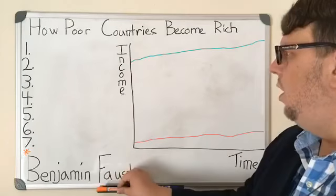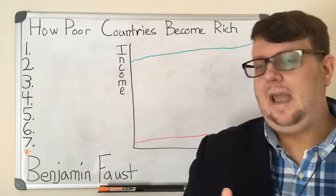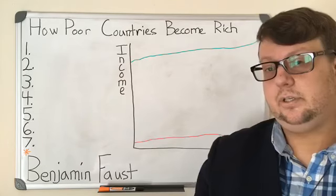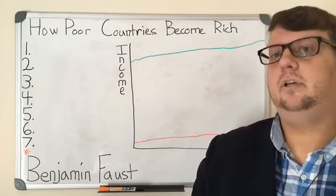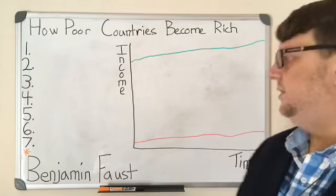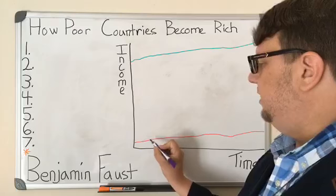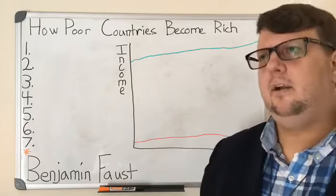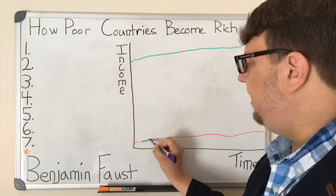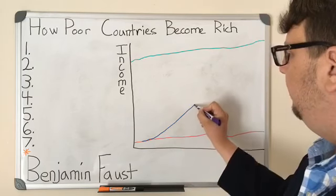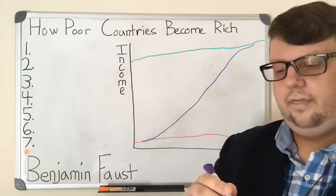So what happens when a country converges? This is not just convergence — it doesn't just happen magically. There are certain things countries can do that will cause or help cause them to converge with a rich nation. What happens, and this has happened over and over, is a nation begins to behave better or circumstances improve, and they break away from the pack. They experience a very high growth rate, and then as they reach the rich nation level, the growth rate slows down and they converge.